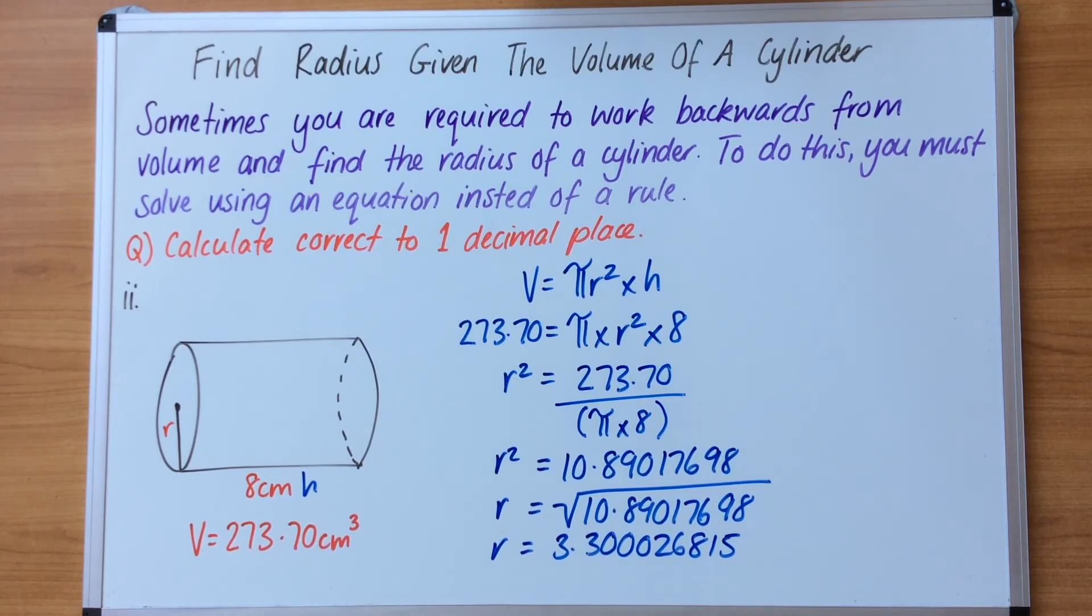Now the question is asking us to round to one decimal place. Again lucky for us it's not going to change the answer. So I've separated this first and second decimal point, underline the looking number. The radius is going to be 3.3 because it doesn't change. We are dealing with metres. So now I know that this radius here is 3.3 metres. If I substitute that back in and calculate the volume, I should come back to this number.